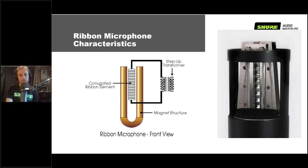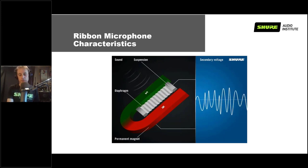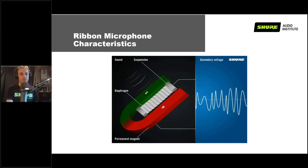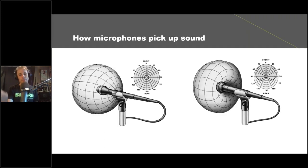Ribbon mics are actually just another form of dynamic microphone, except instead of having a coil of wire on the diaphragm, the diaphragm itself is metal — a corrugated piece of aluminum or aluminum-layered mylar — that vibrates back and forth inside a U-shaped magnet. Ribbon mics have a unique sound characteristic often described as warm or dark, and they contain the harshness of a sound very well. They're not common in live applications, but if you have specific questions about ribbon mics, we can come back to that.